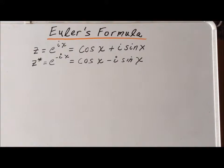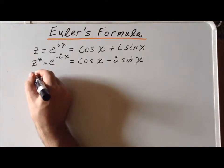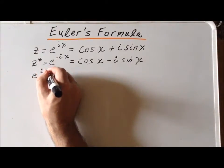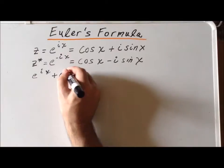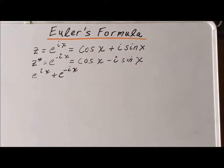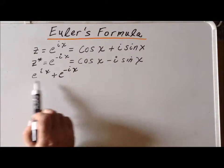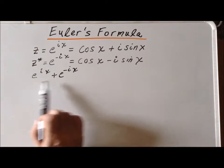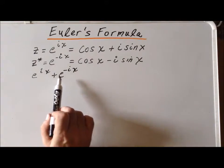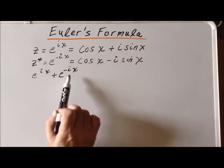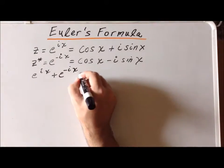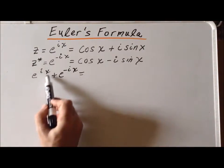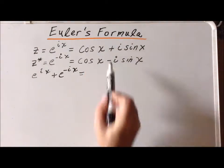Now we'll show some interesting combination formulas that we can derive. Suppose we decide to take e to the i x and add it to e to the minus i x. We can't simply combine these by adding the exponents together — that would only work if we were multiplying. To perform this addition, we have to first convert each term into a trigonometric expression using Euler's formula.